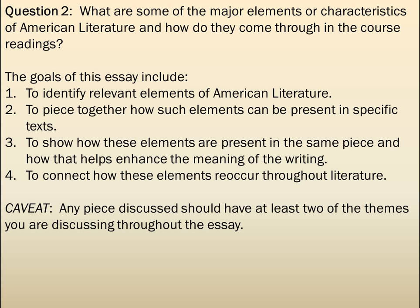Keep in mind the caveat that any piece you discuss should have at least two of the themes you're discussing throughout the essay. That is, if you identify five major elements of American literature, anything you discuss should have at least two of them. You shouldn't discuss a writing that only addresses one — if these are major elements of American literature, then we should see them popping up everywhere. In any writing you're discussing, there should be at least two.